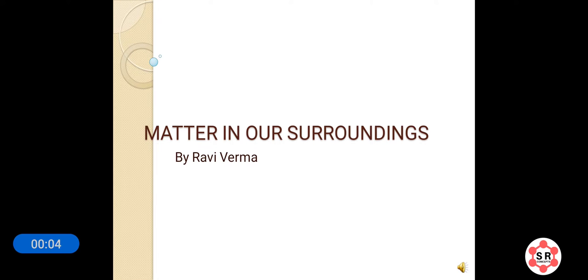Hi, this is Ravi Verma and in this video I am going to start the first chapter of chemistry for class 9th from your NCERT textbook. The title of the chapter is Matter in Our Surroundings. In this video I will cover every fact, every concept and definitions from your textbook, so this video is enough to understand the theory of this chapter completely. While watching this video, you should open your NCERT textbook and after every topic discussed by me, you need to pause the video and read the topic from your NCERT textbook. While doing this, underline the important facts in your textbook and also make topic-wise notes in your science copies.